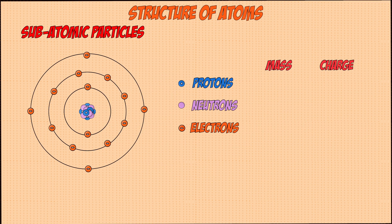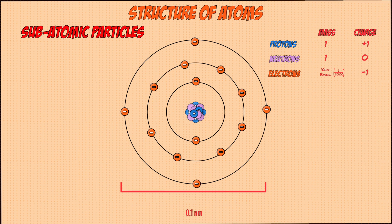Each of these subatomic particles have specific charges and masses. Both protons and neutrons have the same relative mass of 1, whereas electrons are 2,000 times smaller, which we can just say is very small. In terms of charges, protons have a positive charge of plus 1, electrons have a negative charge of minus 1, and neutrons are neutral and have a charge of 0. Atoms are incredibly small and have a radius of around 0.1 nanometers or 1×10⁻¹⁰ meters.